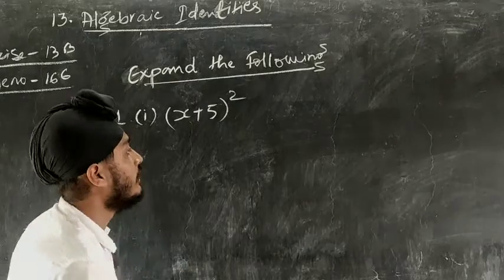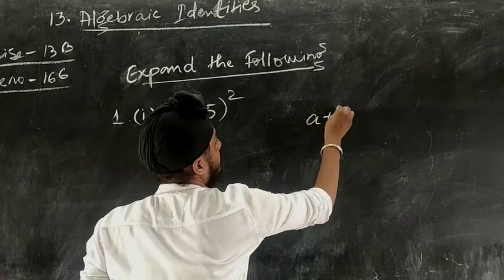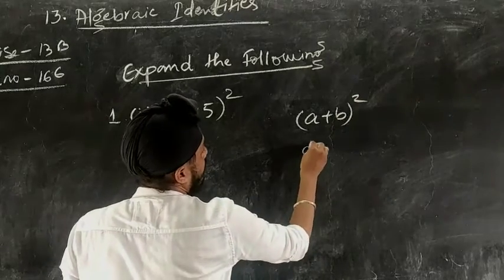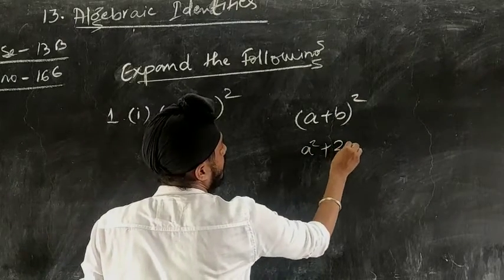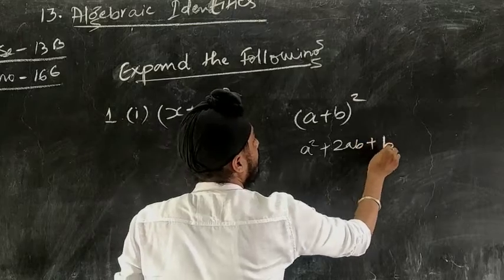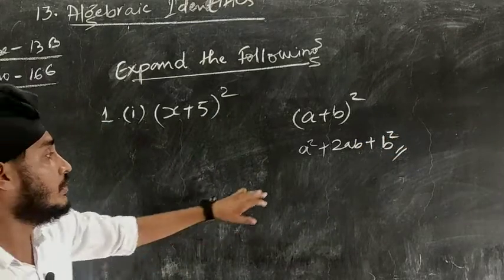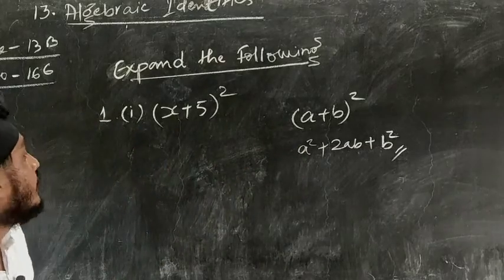Students, you remember the formula (a+b)² = a² + 2ab + b². You are familiar with this formula, so we will use this formula to expand this question.